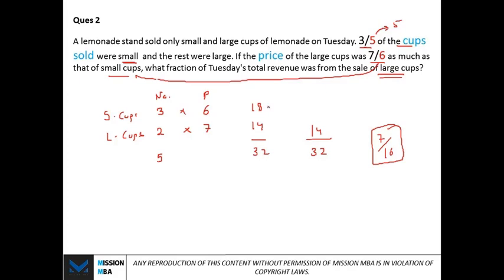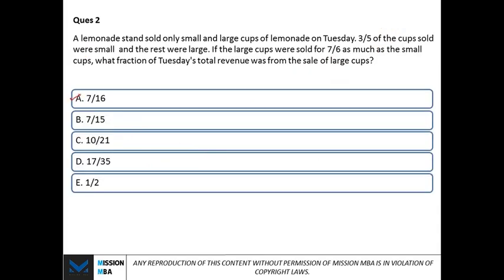Fourteen over thirty-two simplifies to seven by sixteen — and that's the answer, option A. The key is what number to assume: three-fifths relates to cups sold, so assume cups equal five. Seven-sixths relates to the price of small cups, so assume small cup price equals six. Two questions cracked under one minute. It's not just math — it's your aptitude, your utilization of data, and critical thinking to assume good values and reach the answer quickly. Let's hack the GMAT quant.